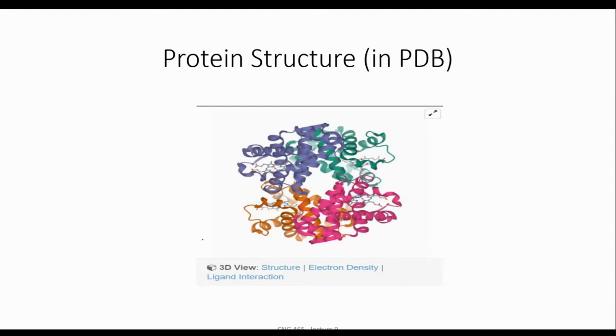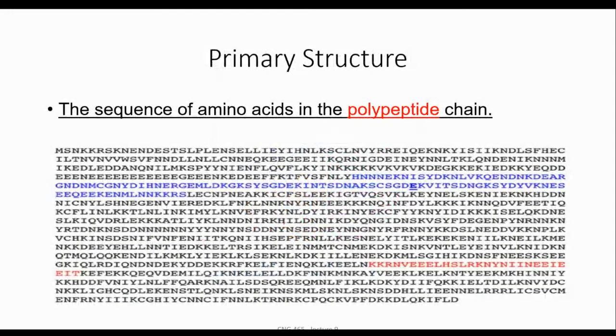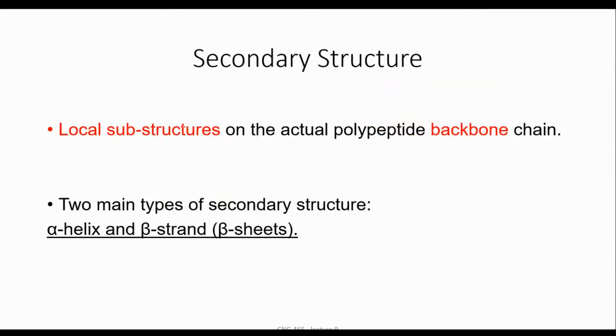I already mentioned about the primary structure—the sequence that we know related to protein that we show them, represent them like sequences like for DNA. This one we call primary structure. We call it also polypeptide chain, the way that we show it like this.